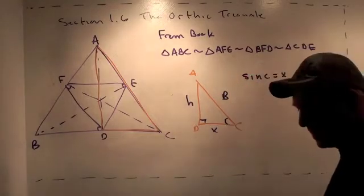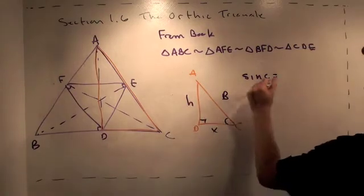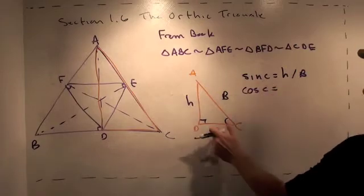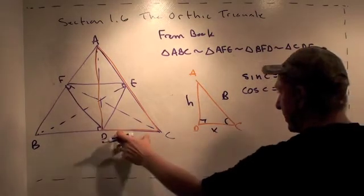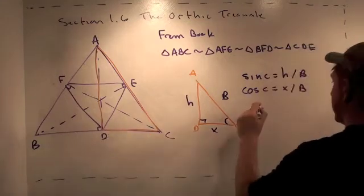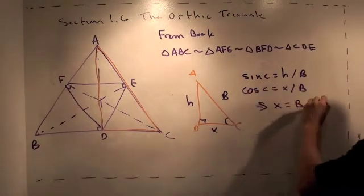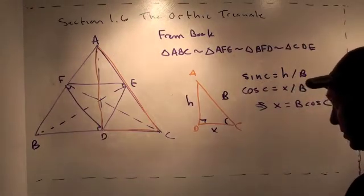Sorry, sine C equals H over B, opposite over hypotenuse, and cosine C equals X over B. So X is one of the sides of the triangle that we're looking for. We learned that X equals B cosine C.